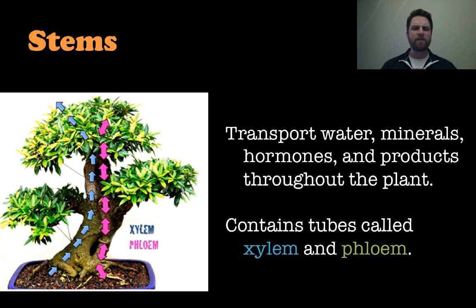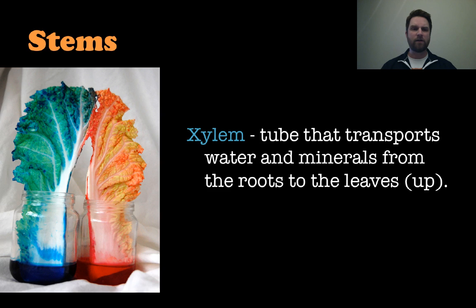Let's go to stems. Stems transport water, minerals, hormones, and other products of photosynthesis up and down the plant through the vasculature of the xylem and the phloem. The xylem is the tube that transports water and minerals from the roots to the leaves — so the xylem goes up, everything goes up through the xylem.